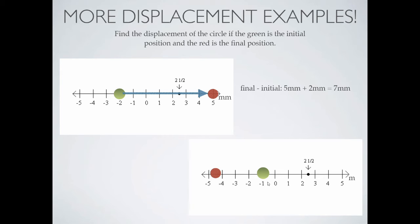This next example down here. We start at negative 1 centimeter, it's in meters now, negative 1 meters, and we move to what looks like negative 4.5 meters. So negative 4.5 minus negative 1, plus 1 because it's a double negative, gives you negative 3.5 meters.